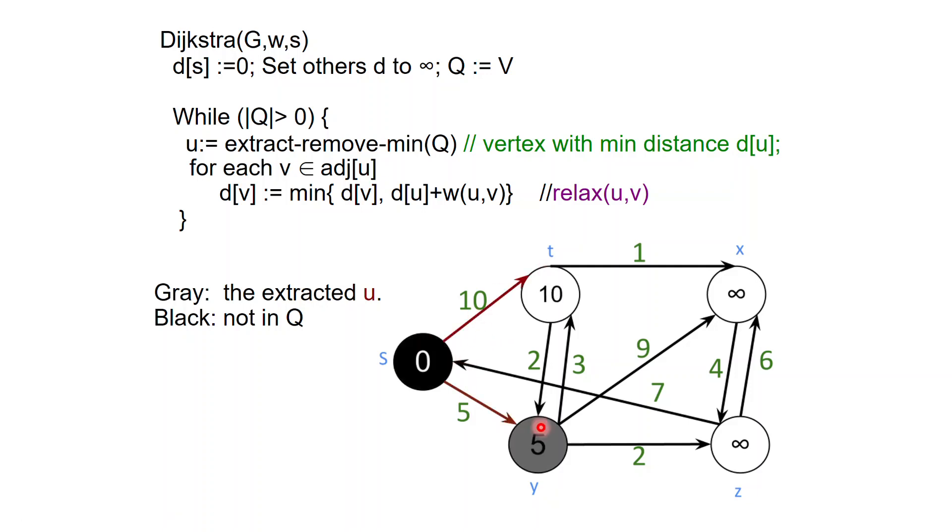Then the minimum now will be node Y, which has a distance of five. We are going to relax all its neighbors. So this node T will now get a distance of eight. Node X will get a distance of five plus nine, 14. Node Z will get five plus two, which is seven.